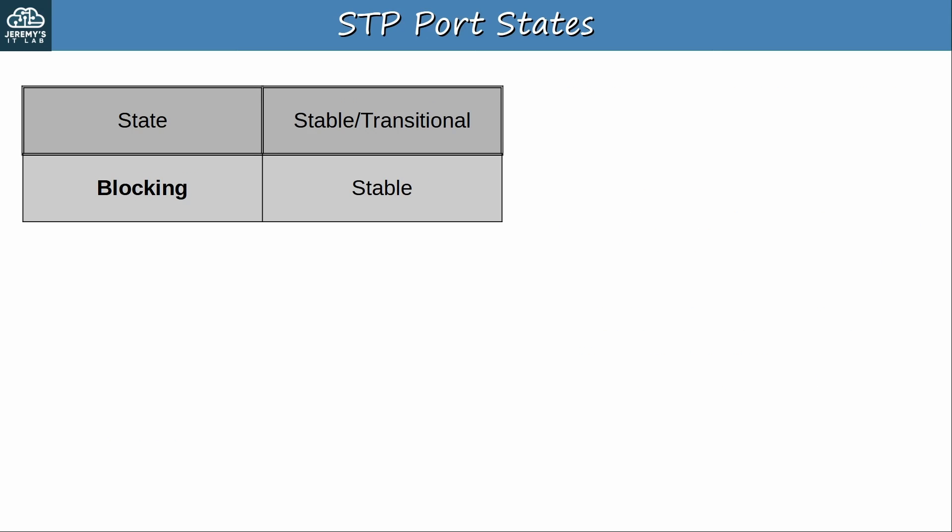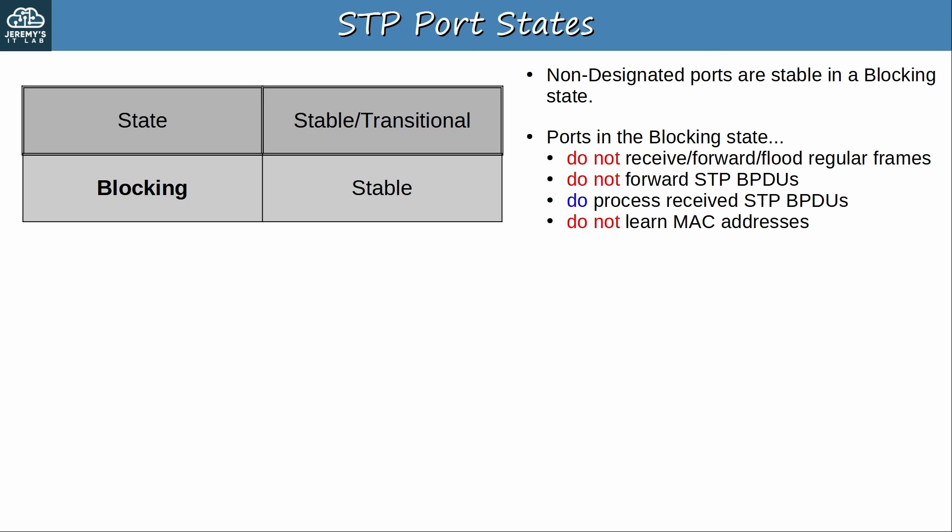Let's look at each state in greater detail, starting with the blocking state. Non-designated ports are stable in a blocking state. In the blocking state, ports do not receive, forward or flood regular frames. They do not forward STP BPDUs, although they do process BPDUs that they receive, so they can react if they receive a BPDU that indicates a change in the topology. However, blocking ports do not learn MAC addresses from frames they receive. This port state is the key to STP, because STP works by blocking redundant links to avoid layer 2 loops.